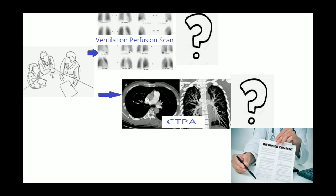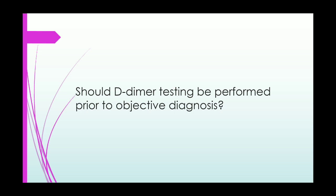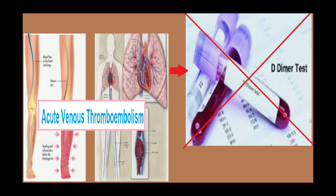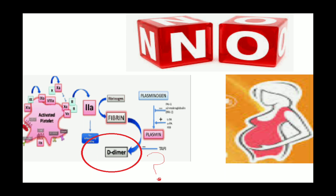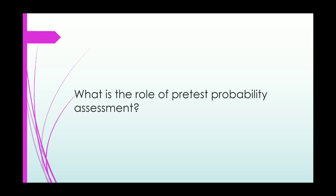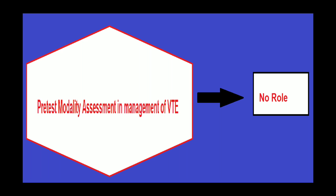D-dimer testing should not be performed in the investigation of acute venous thromboembolism. Clinicians should also be aware that at present there is no role for pre-test probability assessment in the management of acute VTE in pregnancy.